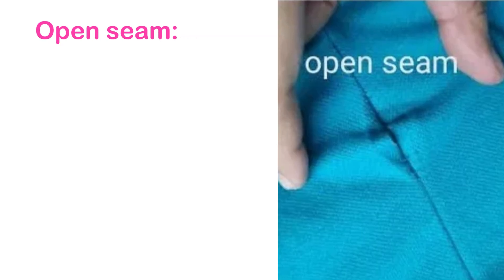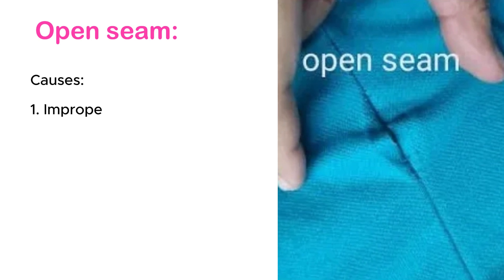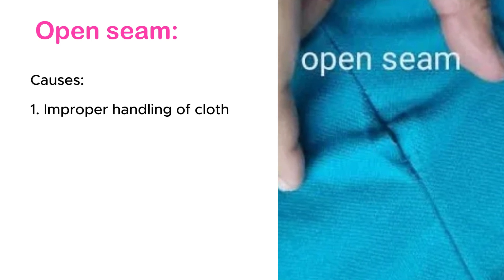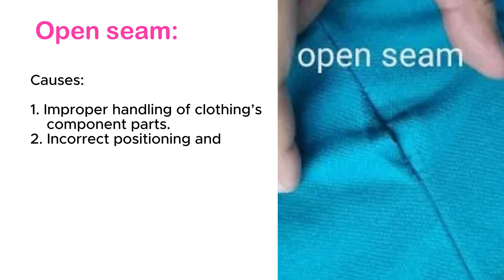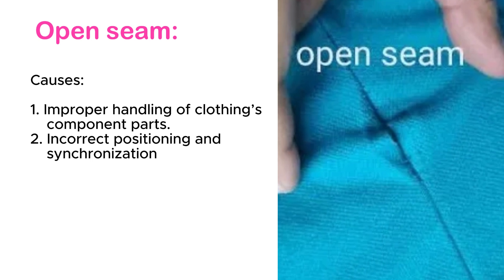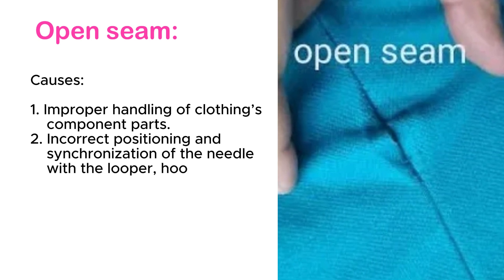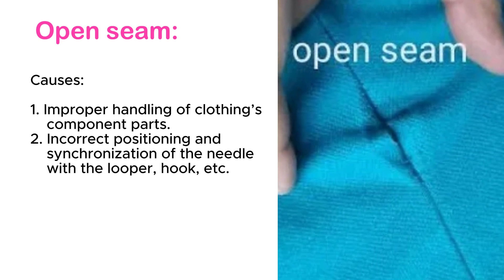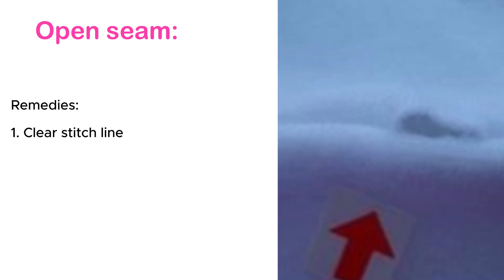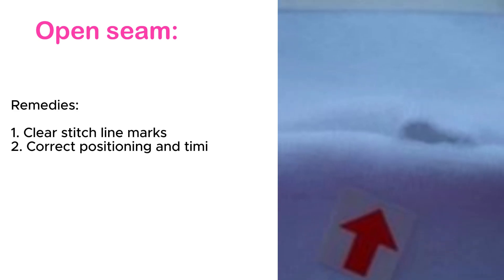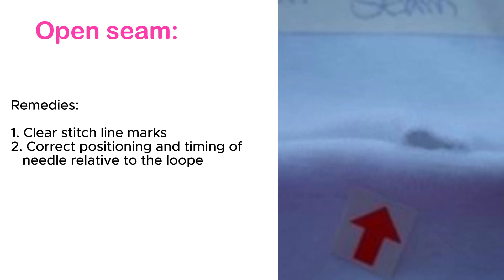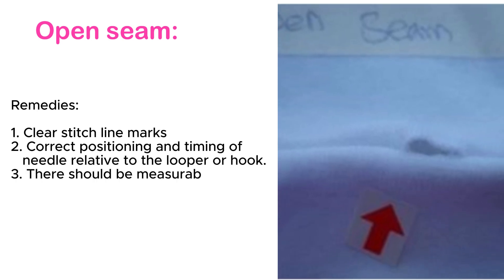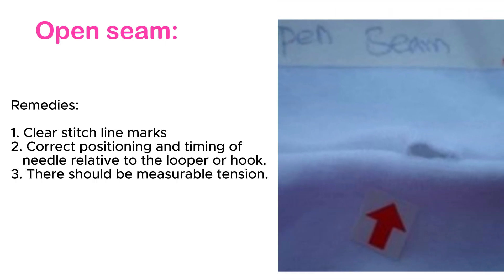Open seam. Causes: improper handling of clothing's component parts. Incorrect positioning and synchronization of the needle with the looper, hook, etc. Remedies: clear stitch line marks. Correct positioning and timing of the needle relative to the looper or hook. There should be measurable tension.